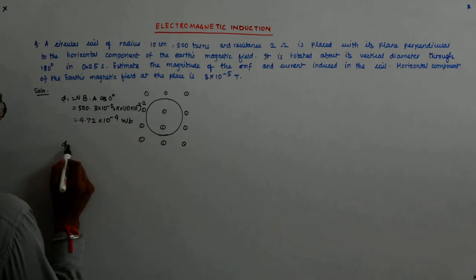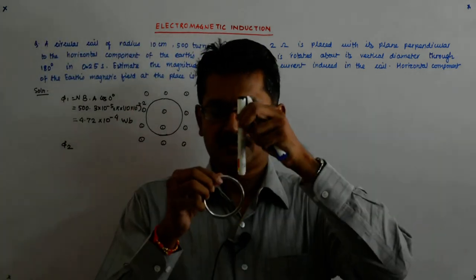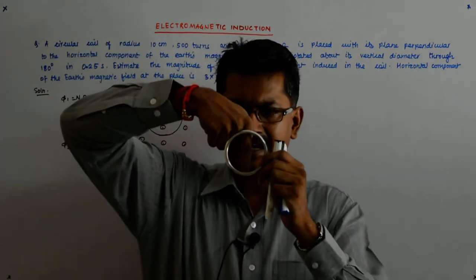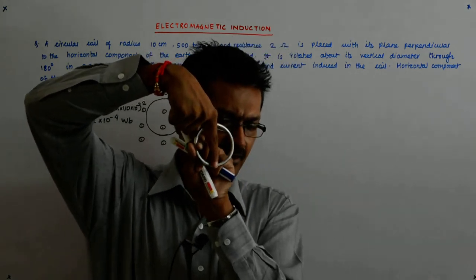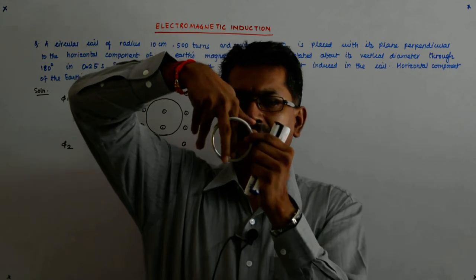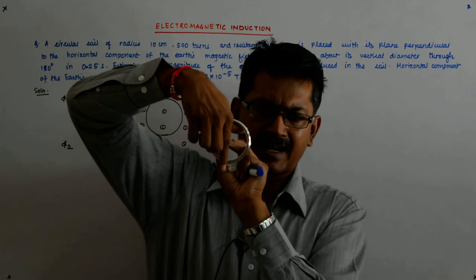What is φ₂? Now, about this diameter, about a vertical diameter like that, I rotated it by 180 degrees. Now my area vector also got rotated in the process. It became like that.